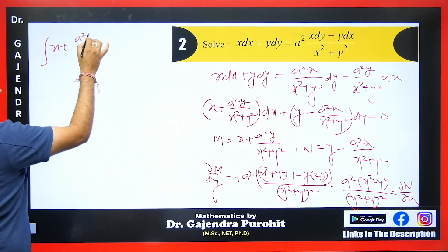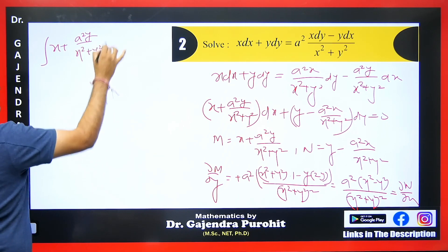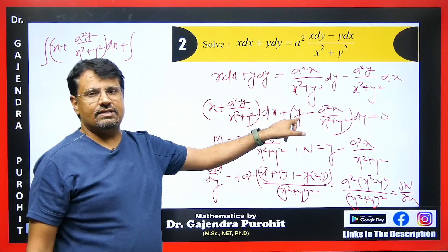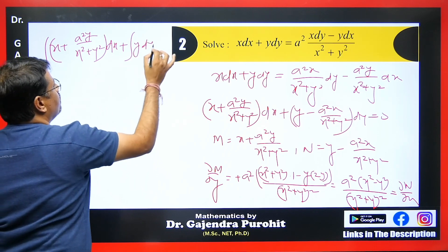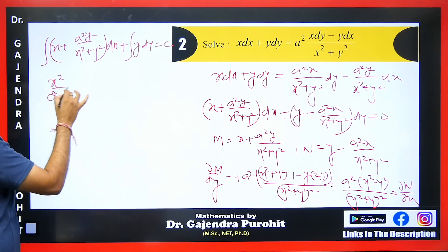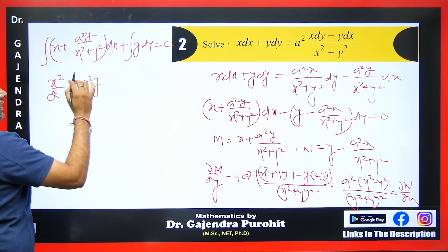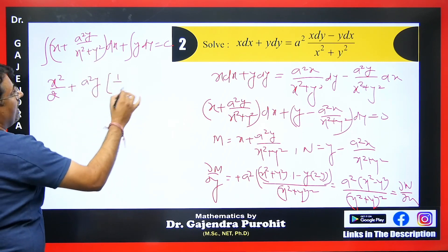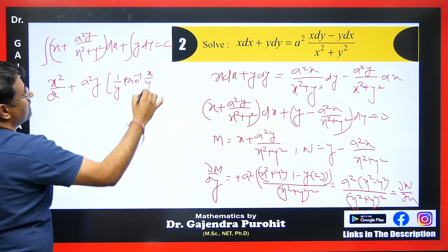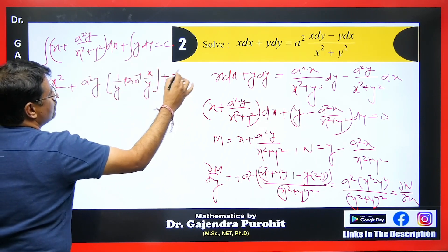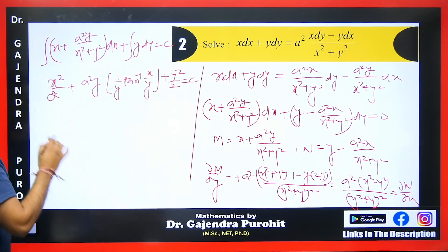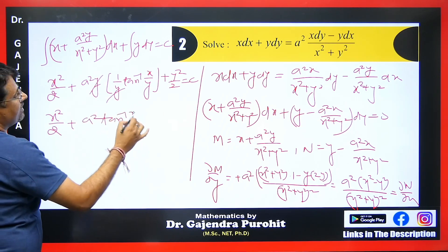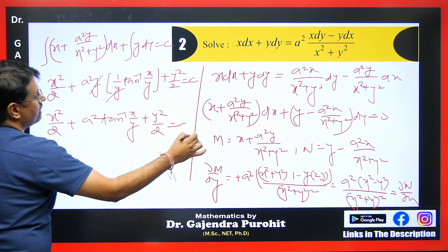We integrate directly. The first term x integrates to x²/2. For a²y/(x² + y²)·dx, treating y as constant, we use the standard integral 1/(x² + a²), giving (a²/y)·(1/y)·tan⁻¹(x/y) — and y cancels — leaving a²·tan⁻¹(x/y). The second term y·dy integrates to y²/2. So the answer is x²/2 + a²·tan⁻¹(x/y) + y²/2 = c.